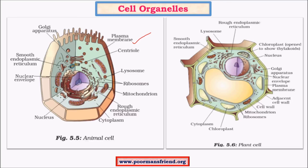Cell organelles are held in their position due to a jelly-like substance called cytoplasm, which holds all the cell organelles in place. And cytoplasm is covered by plasma membrane.